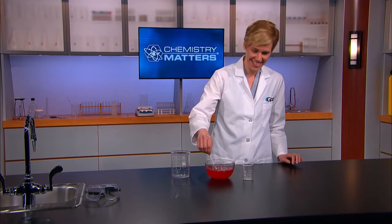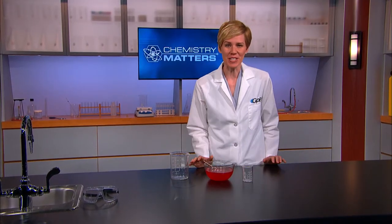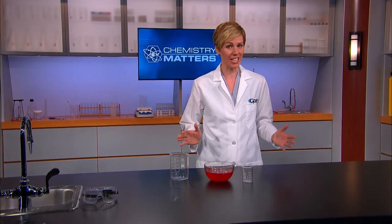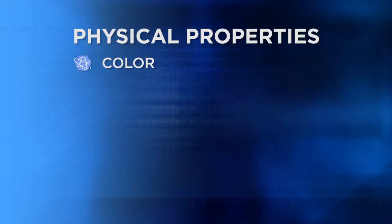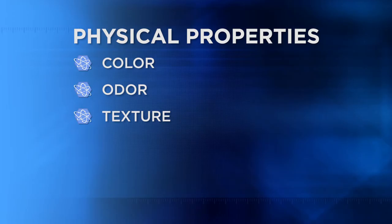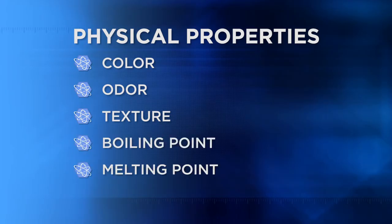The list of physical properties our students came up with was really good, but here are some that might be less obvious. Some physical properties are well known and easily observed, such as color, odor, and texture. Others, such as boiling point, melting point, and density, are not as well known and we often need tools or instruments to measure them. But they can be very important in helping to identify chemicals.